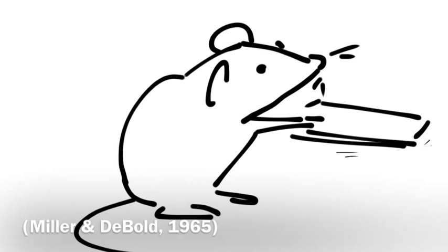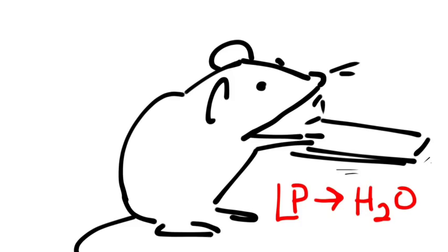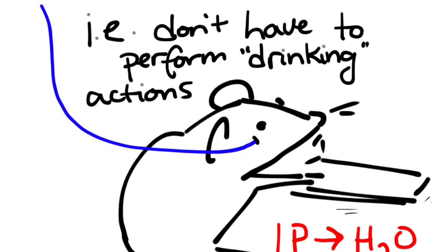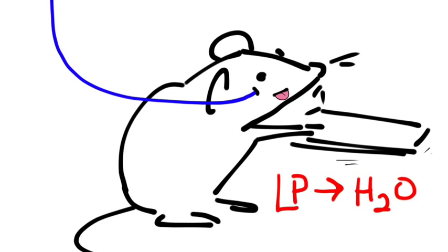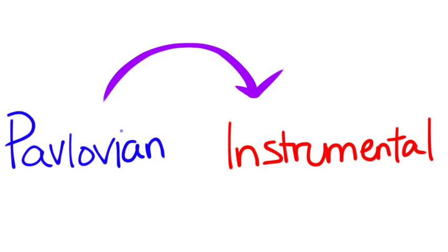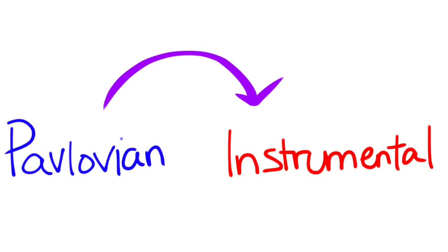A sample of rats were trained to bar press for water. The water was delivered directly through an oral fistula, so that they didn't have to perform the action of drinking themselves. The researchers found that when the animals bar pressed, they would begin to lick, an unconditioned response to water that was unnecessary for them to actually get or drink the water. This study demonstrates that Pavlovian processes and instrumental processes are often intertwined and exert influence over each other.